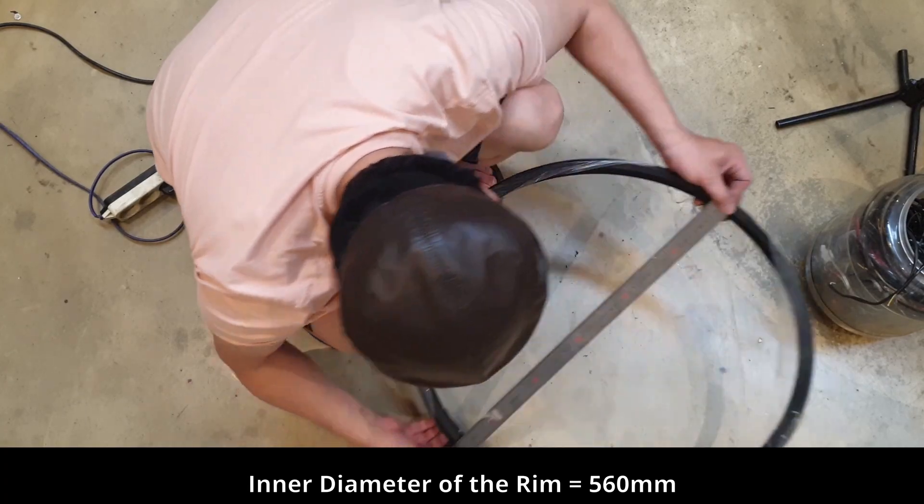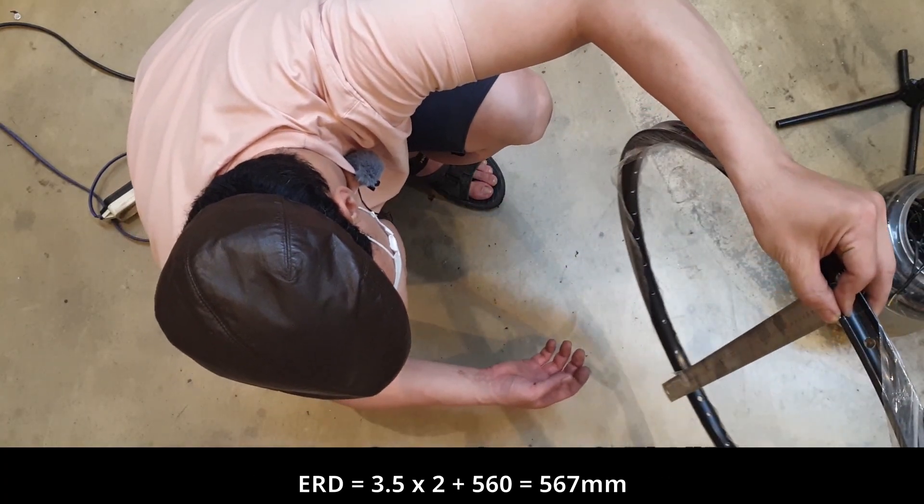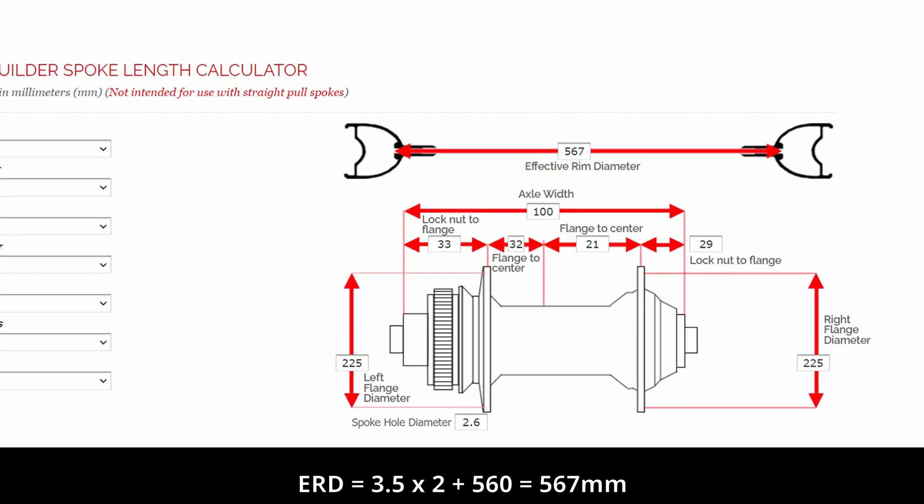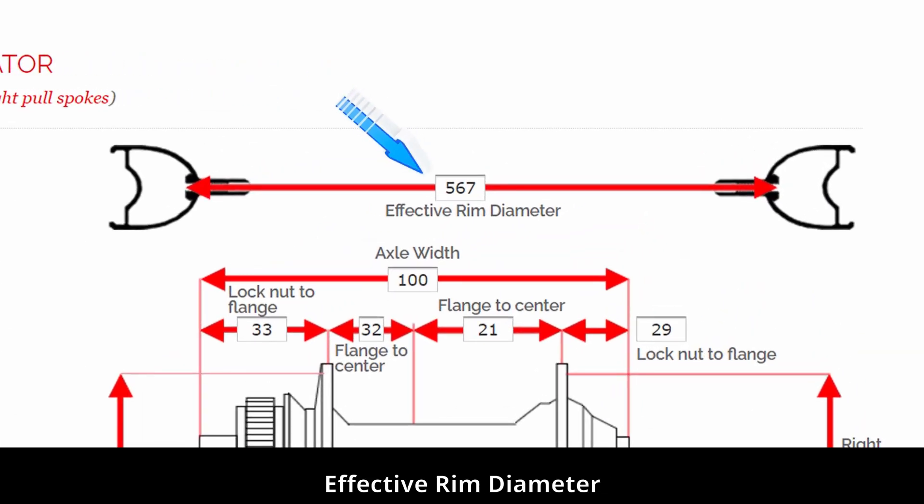ERD equals 3.5 by 2 plus 560 equals 567 millimeters effective rim diameter.